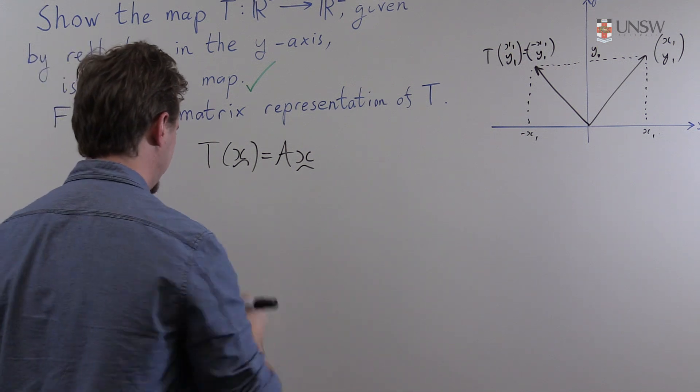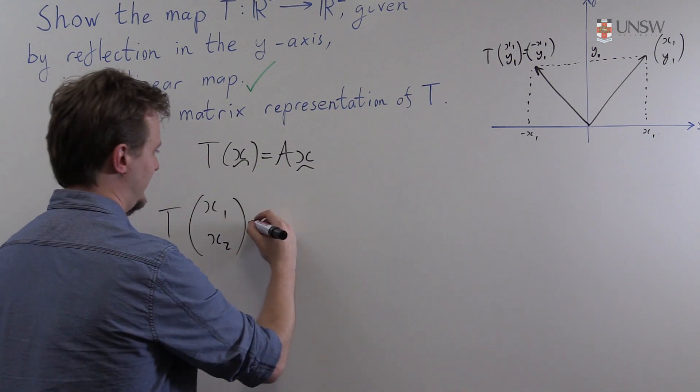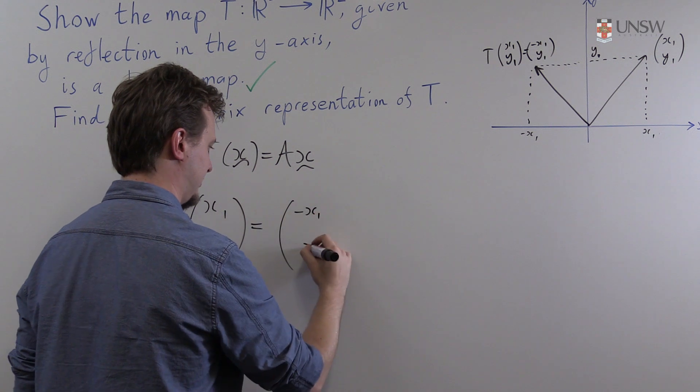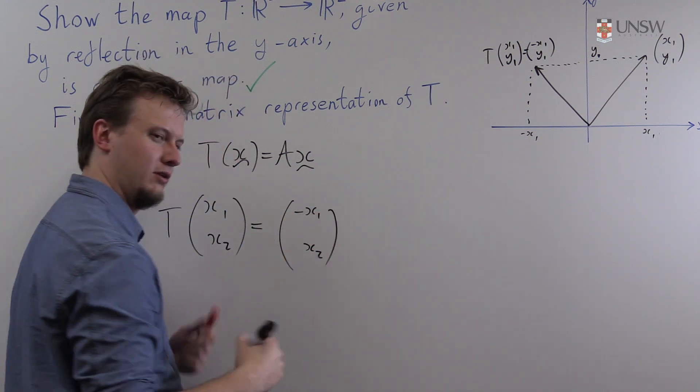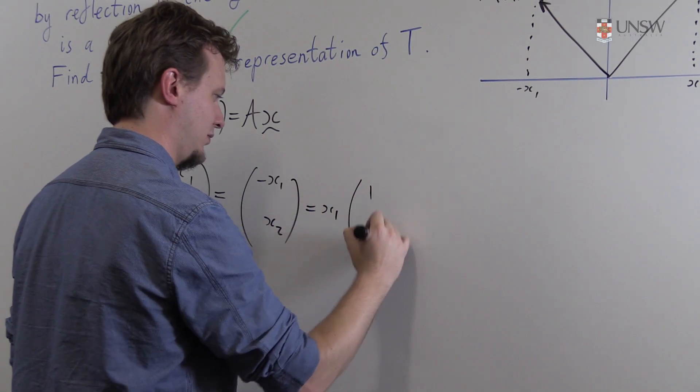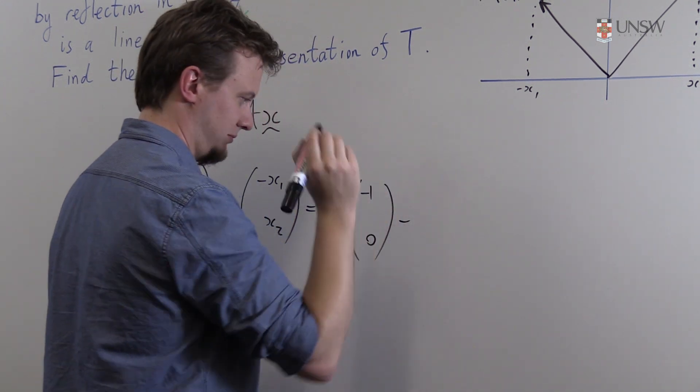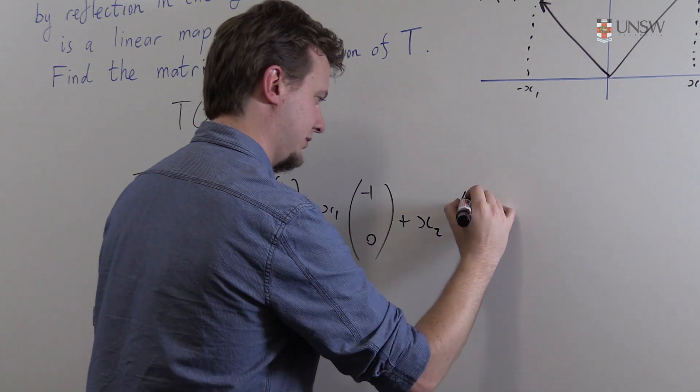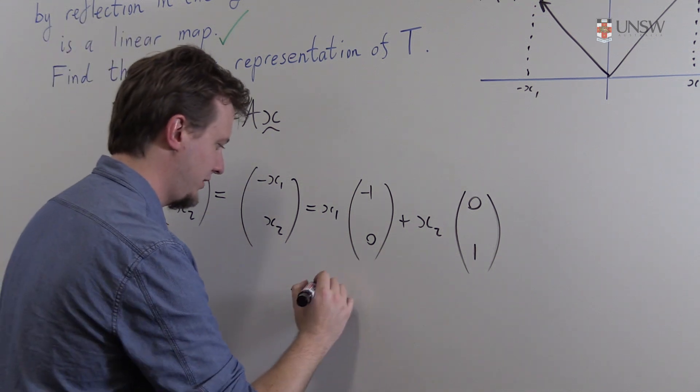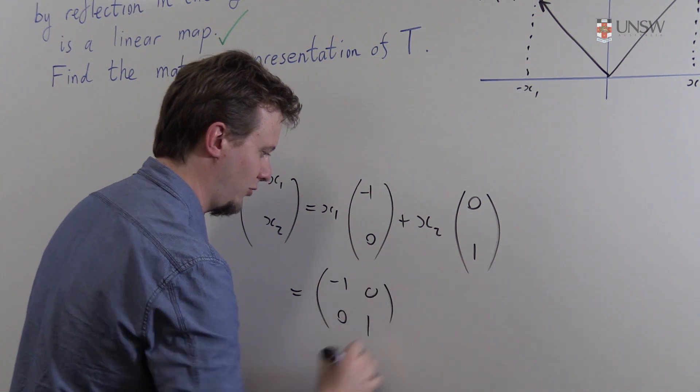So if I was to take this map T and apply it to (x₁, x₂), that is just the vector (-x₁, x₂). So if we expand this it becomes x₁ times the vector (-1, 0) plus x₂ times the vector (0, 1) and we can easily package this up in a matrix.